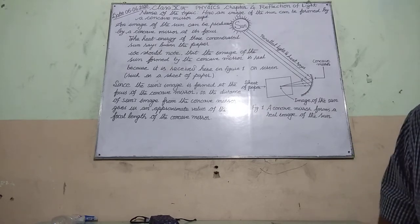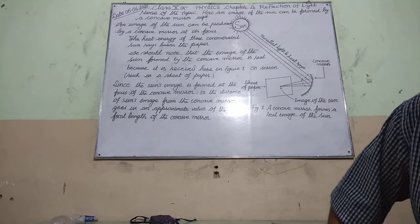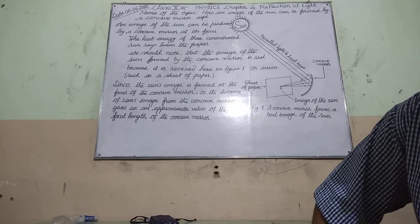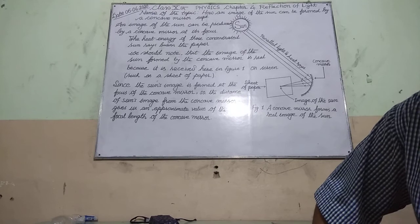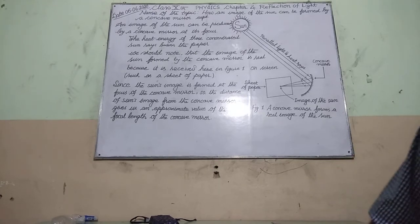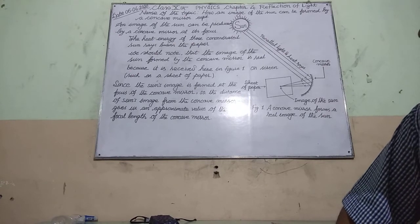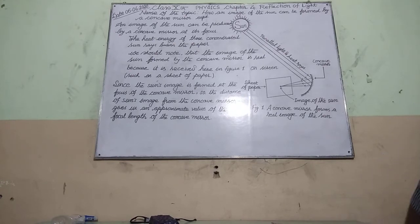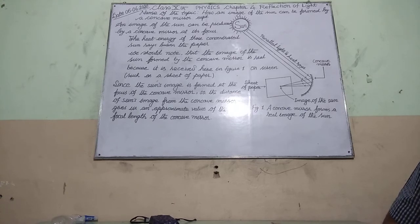To understand the reflection of light through a spherical mirror, we must understand all these essential terms. Now I am going to the next topic: how an image of the sun can be formed by a concave mirror.